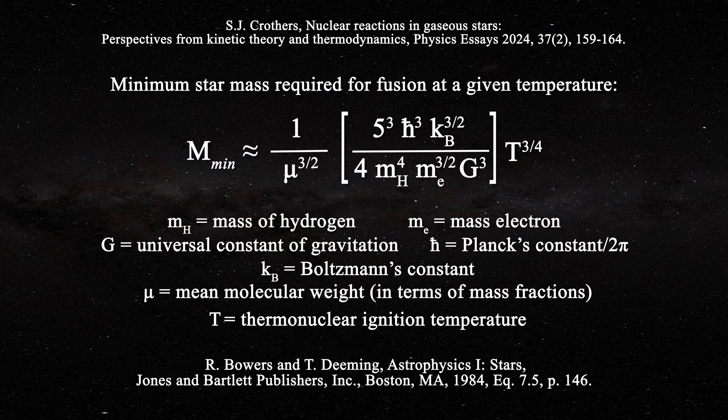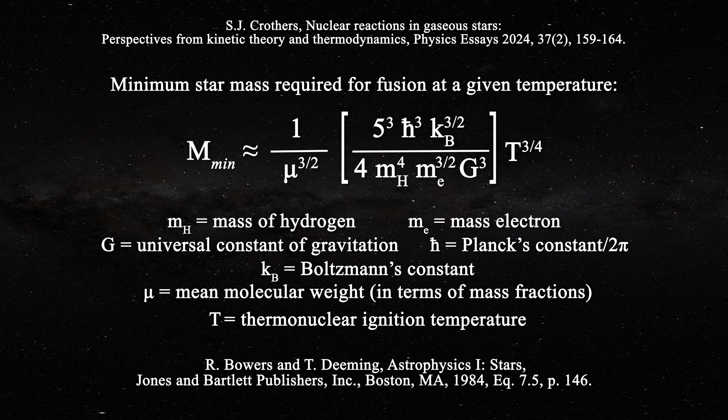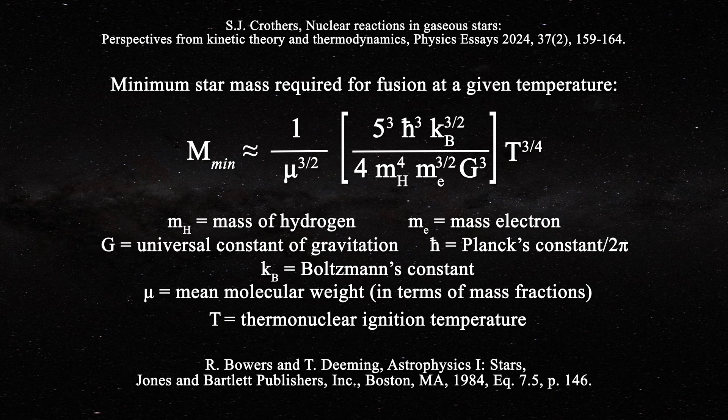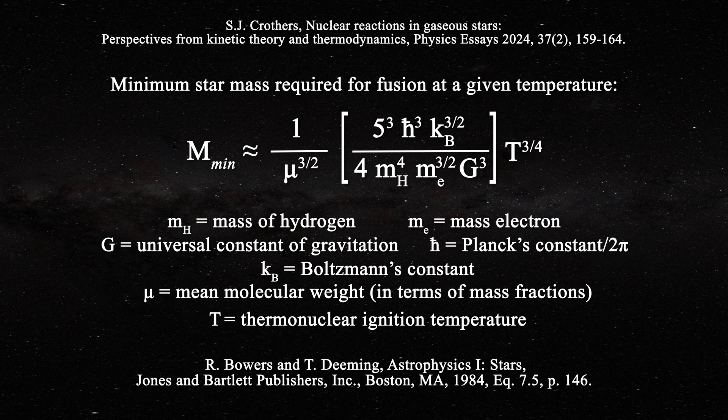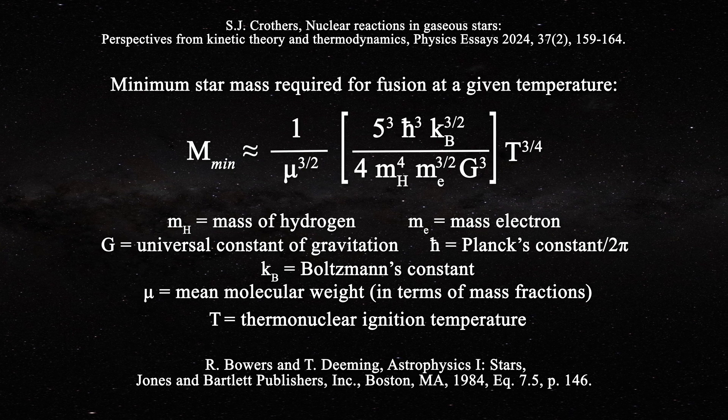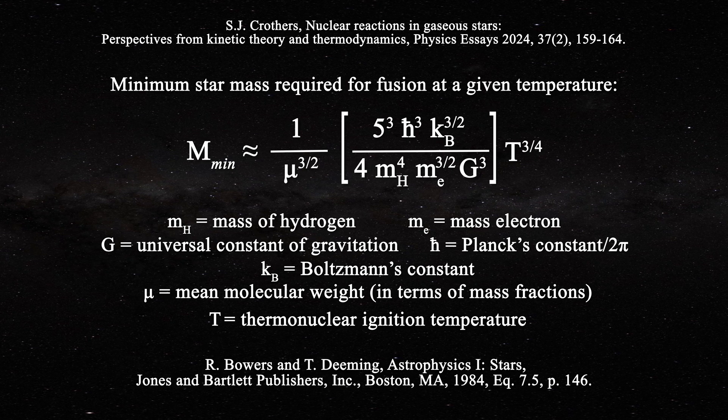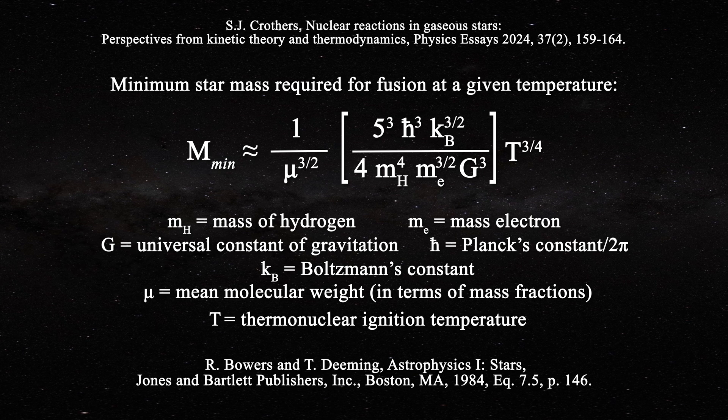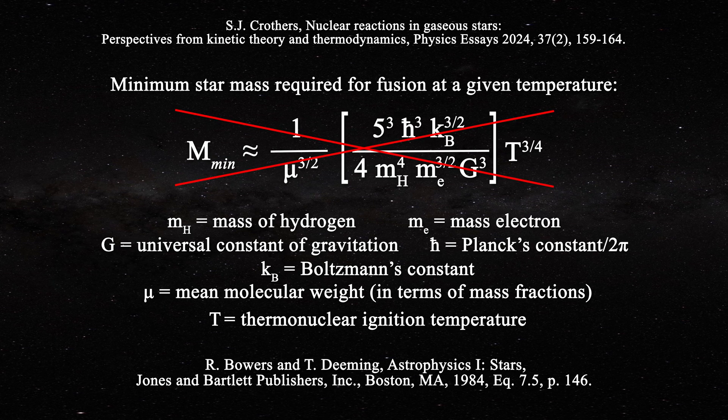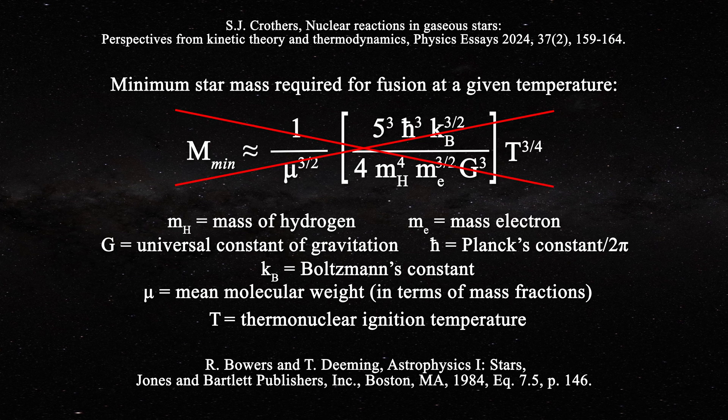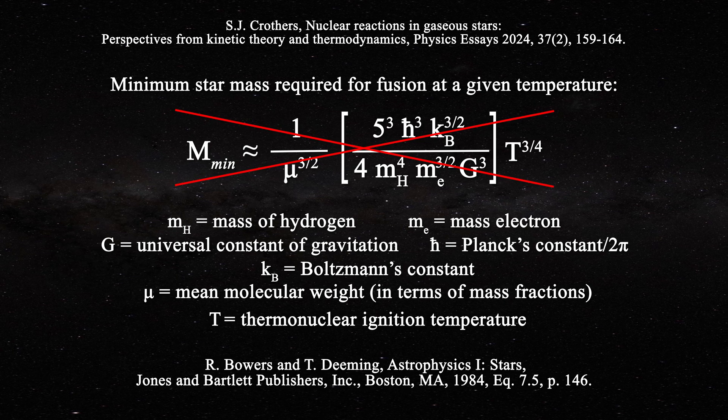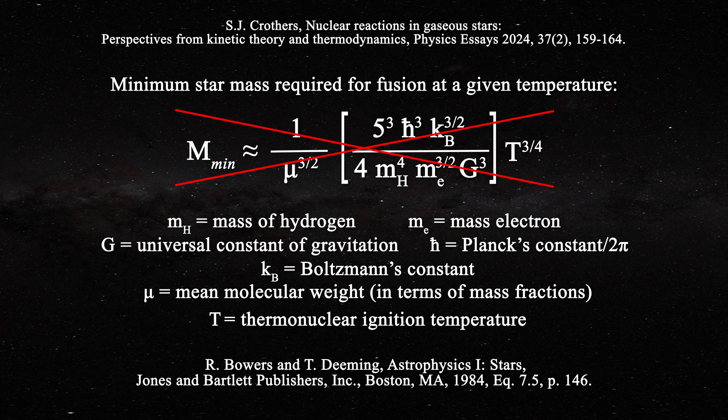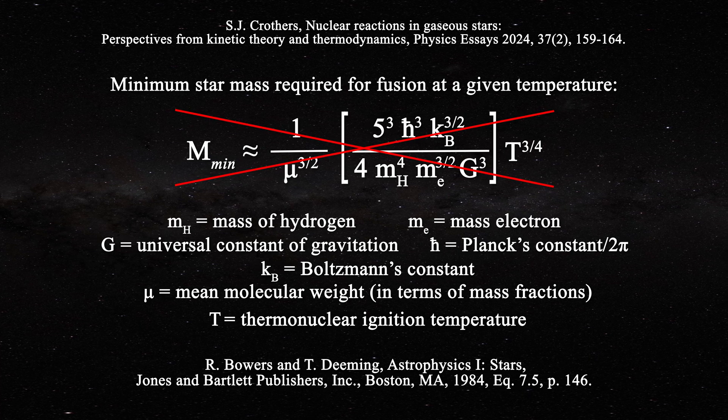The astronomers go on to calculate the minimum mass M_min of a gaseous star, composed of a fuel characterized by mean molecular weight μ in terms of mass fractions, for a thermonuclear ignition temperature T. In this expression, all terms on the right except T are either pure numbers or physical constants. Hence, the right side is intensive because T to the 3/4 is intensive, but the left side is not intensive since mass is extensive.